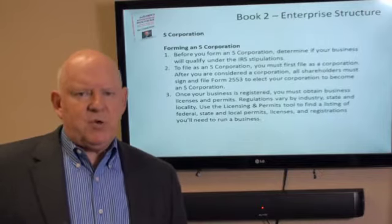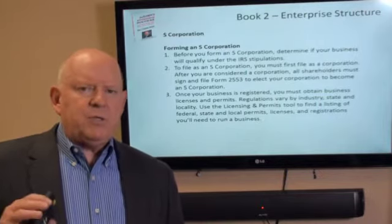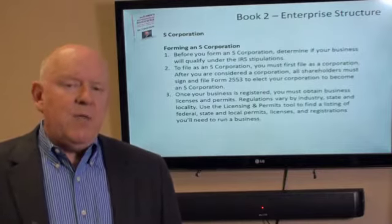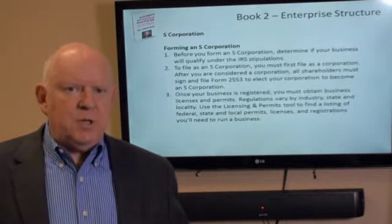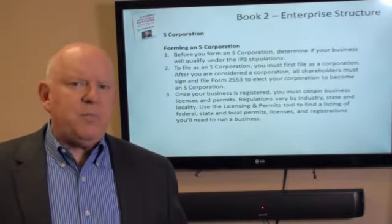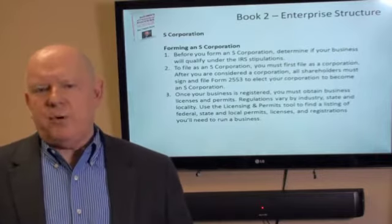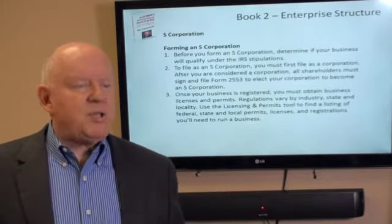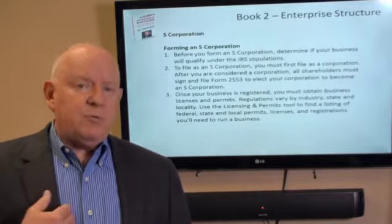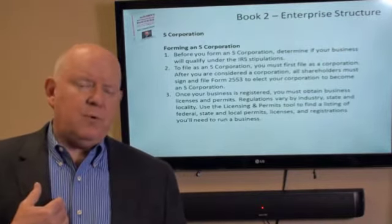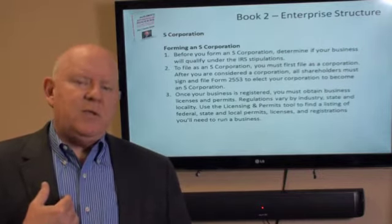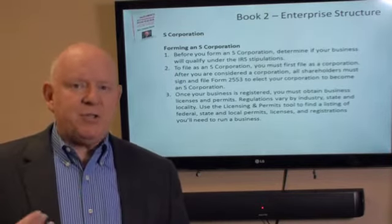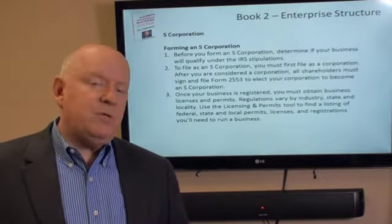The big difference between a C-Corporation and an S-Corporation is taxes. An S-Corporation is treated like a partnership, meaning all profits are distributed to the shareholders based upon the number of shares. So let's say you and I are shareholders in an S-Corporation. I have 10% of the stock, you have 5%, and the company makes $100,000. I'm going to receive a K-1 — which is a partner share statement for an S-Corporation — telling me I earned $10,000 of profit and have to pay taxes on that annually.